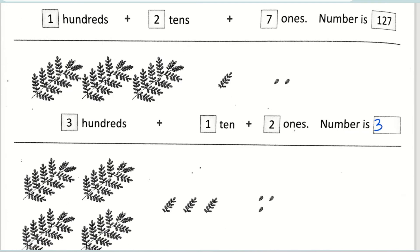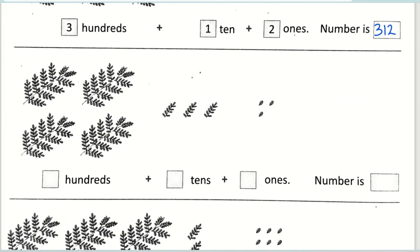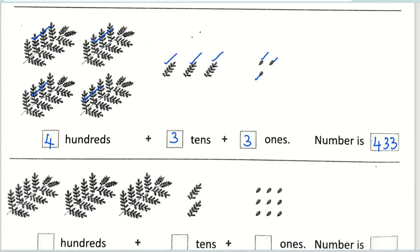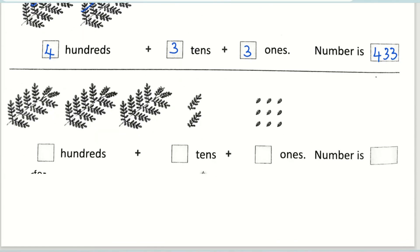So the next one — how many hundreds are there? One, two, three, four — there are four hundreds. And how many tens are there? One, two, three — there are three tens. And how many ones? One, two, three — there are three ones. So the answer is four hundred thirty-three.